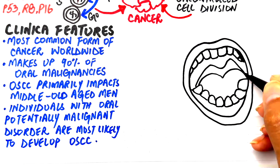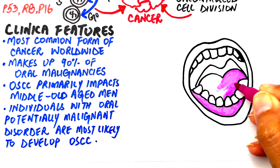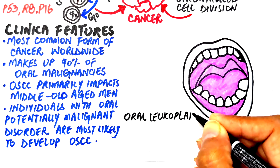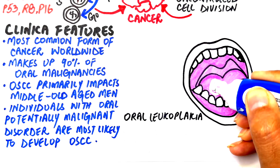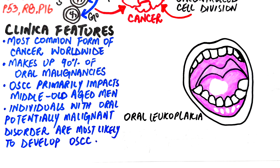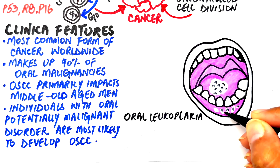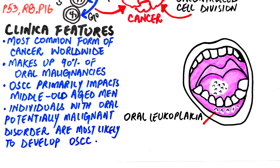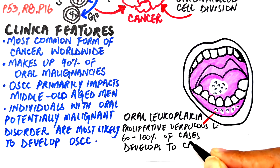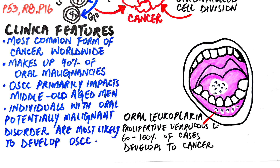Out of all potentially malignant disorders, oral leukoplakia carries a higher risk of turning into cancer, especially in non-homogeneous types. One rare but serious form is proliferative verrucous leukoplakia, which appears as multiple thick, white, warty patches with a predilection for gingival tissues and is usually asymptomatic. However, it behaves aggressively, often recurs after removal, and up to 60–100% of cases eventually develop into oral cancer.